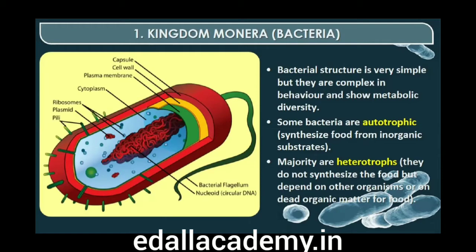Some bacteria are autotrophic — they synthesize their own food from inorganic substrates. They may be photosynthetic autotrophs or chemosynthetic autotrophs. The vast majority of bacteria are heterotrophs — they do not synthesize their own food but depend on other organisms or on dead organic matter for food.